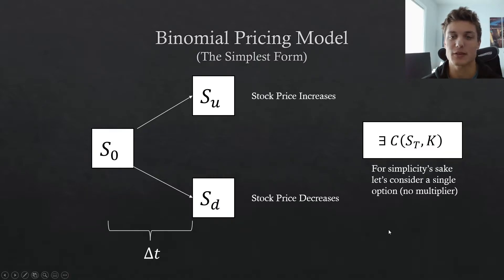If we take a look at the binomial pricing model proposed by Cox, Rubinstein, and Ross in its simplest form, then we can just represent one step in time. So let's kind of break this down a little bit to really get a good understanding of what's going on.